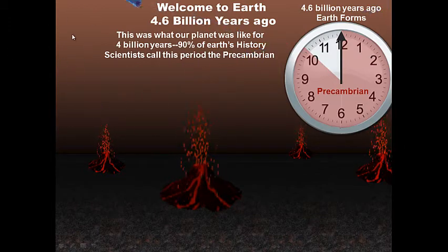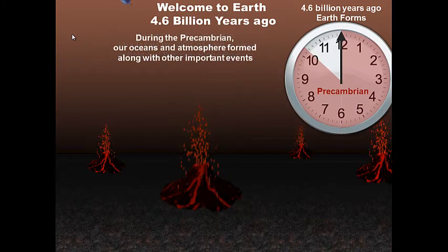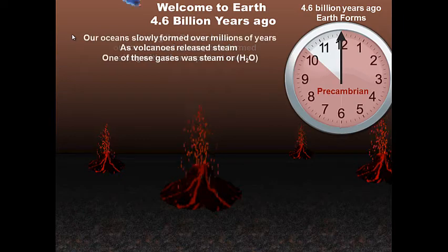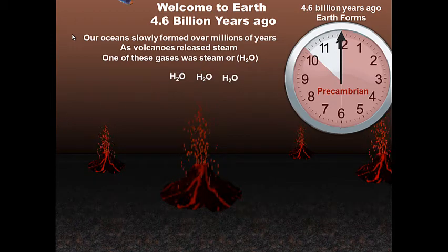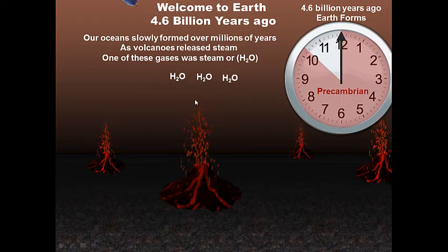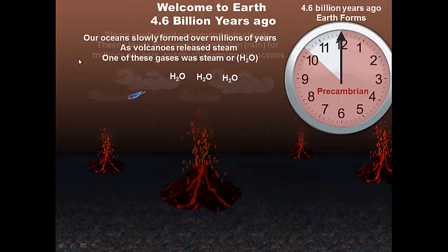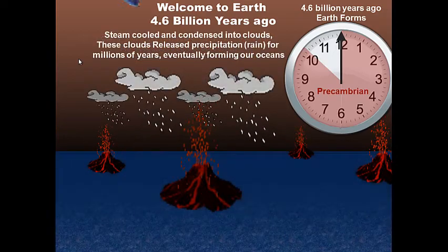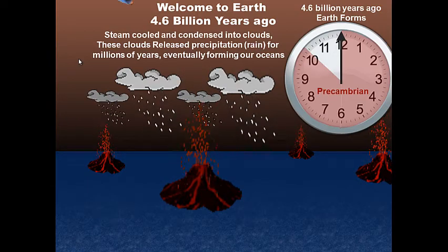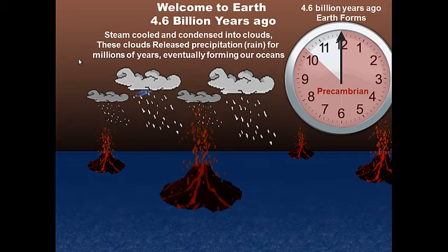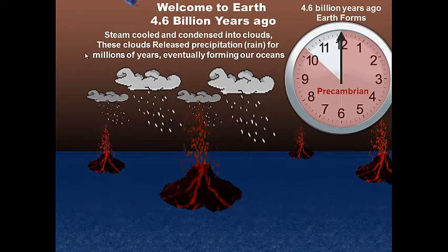We call this time period the Precambrian. A lot of important things happened during the Precambrian. Our oceans and atmospheres formed, along with other important events. Our oceans slowly formed over millions of years as volcanoes released steam. One of the gases that comes out of volcanoes is H2O — steam. That steam cooled and condensed into clouds, and these clouds released rain, precipitation, for millions of years. Over time, all this rain made our oceans.